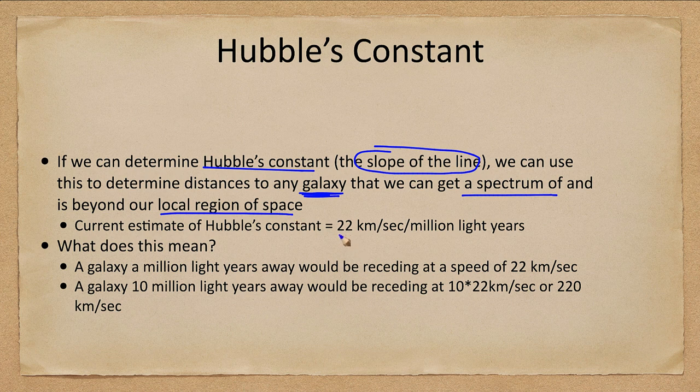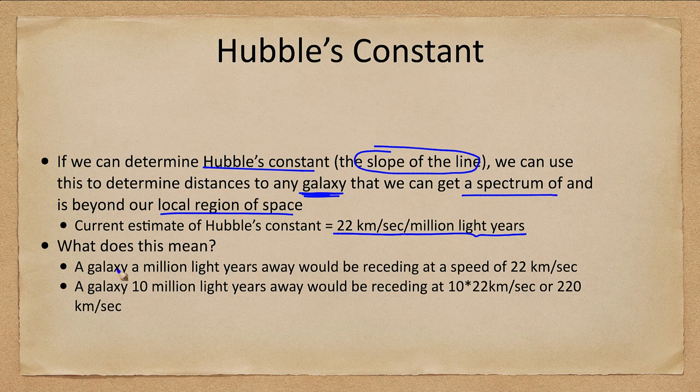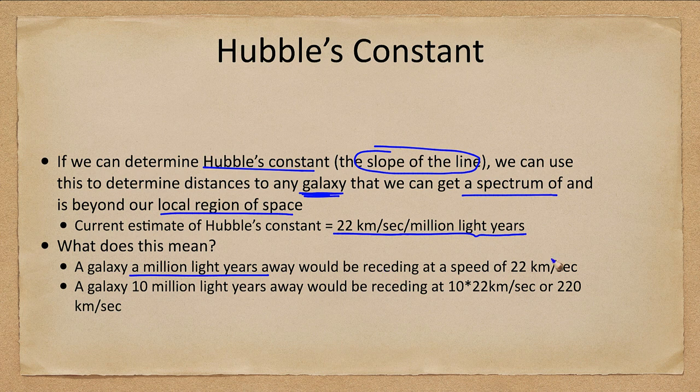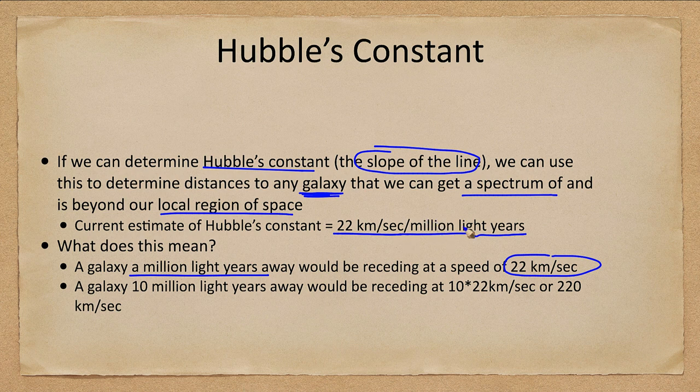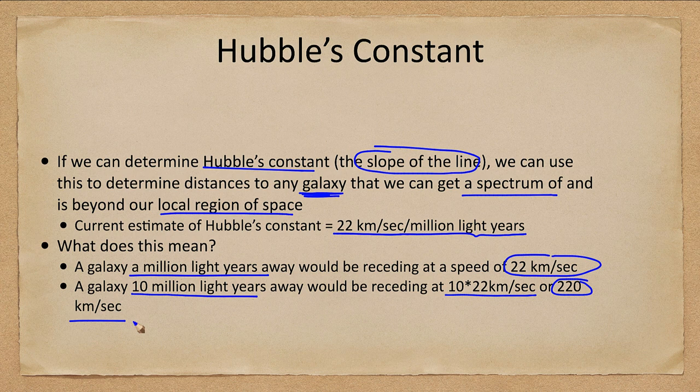We can currently estimate that Hubble's constant is 22 kilometers per second per million light years. What does that mean? Well, that means that a galaxy one million light years away would be receding at a speed of 22 kilometers per second. So it's 22 kilometers per second for every million light years the galaxy is away from us. A galaxy ten million light years away, we'd multiply this by ten. So ten times 22, or 220 kilometers per second at which it is receding. The farther away it is, the faster it is receding.